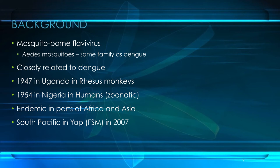Zika virus is a mosquito-borne flavivirus — that's the family of viruses it comes from — and it's closely related to the dengue virus, which is also a flavivirus. Zika was first isolated from a rhesus monkey in the Zika forest of Uganda in 1947, hence the name Zika, because of the name of the forest from which it was isolated.